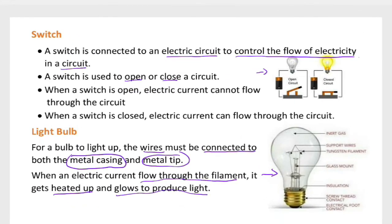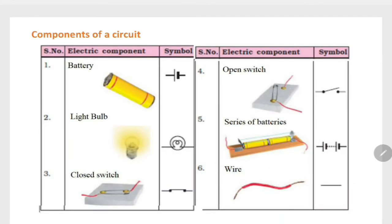Let's look at the components of a circuit. First one, battery. The battery has a cap on the positive end and doesn't have a cap, so the long one is the positive one and that's the negative one. The light bulb is like this, or it can be like this.